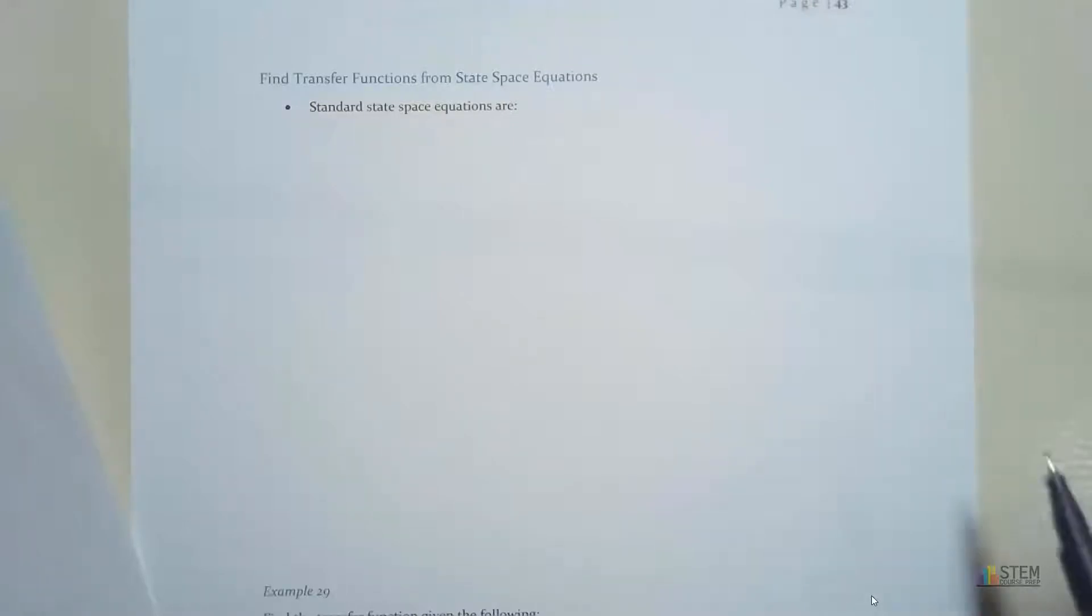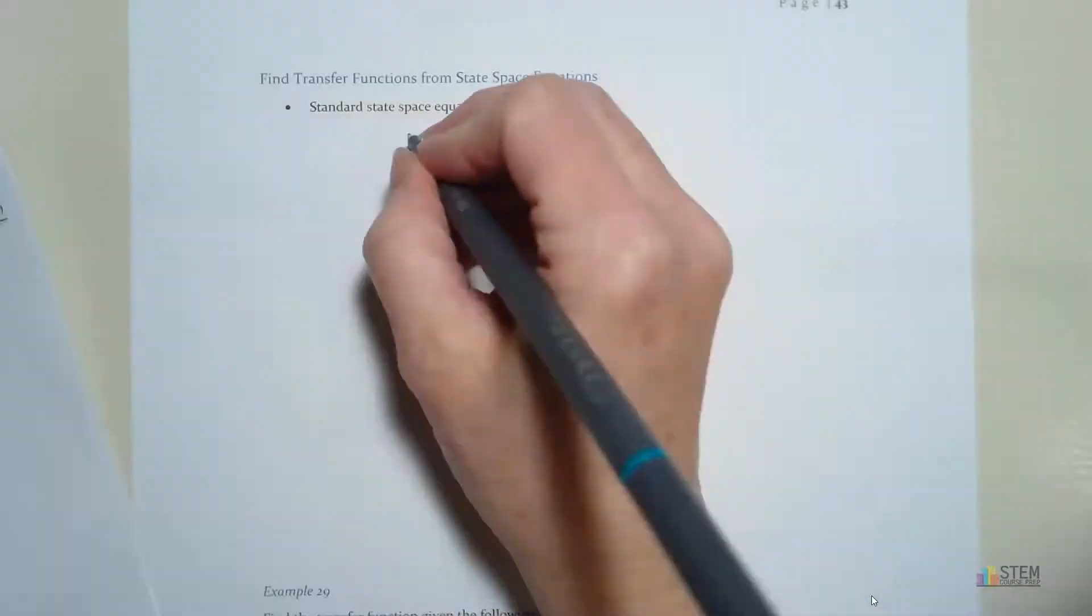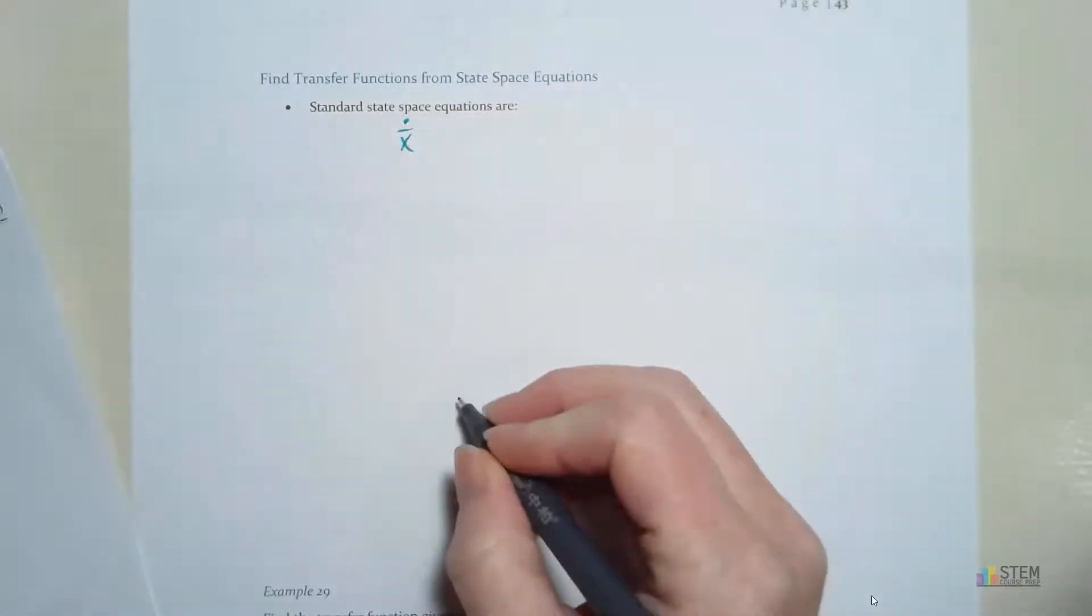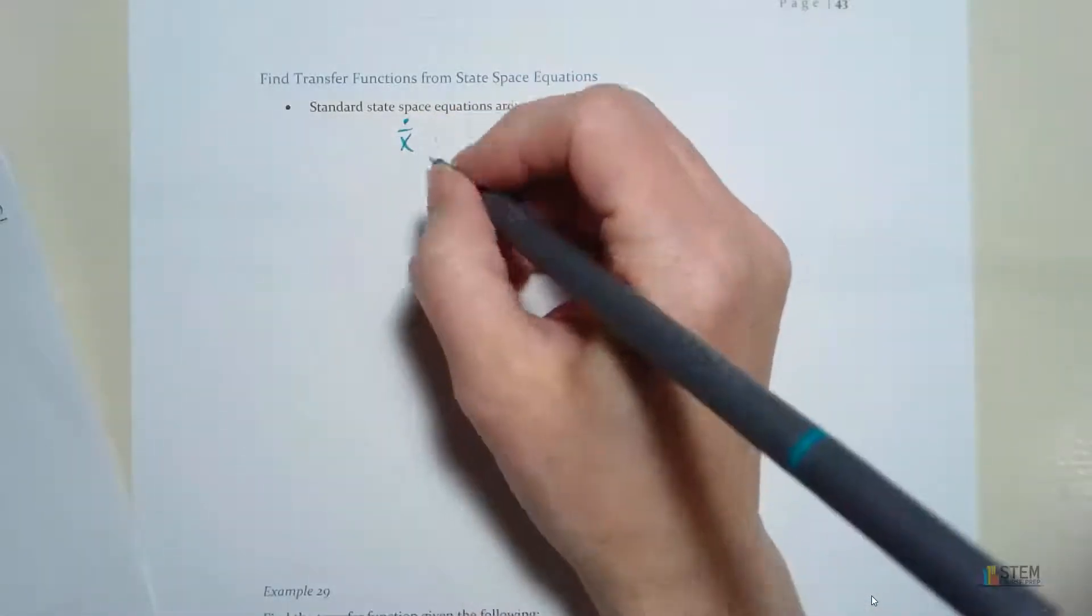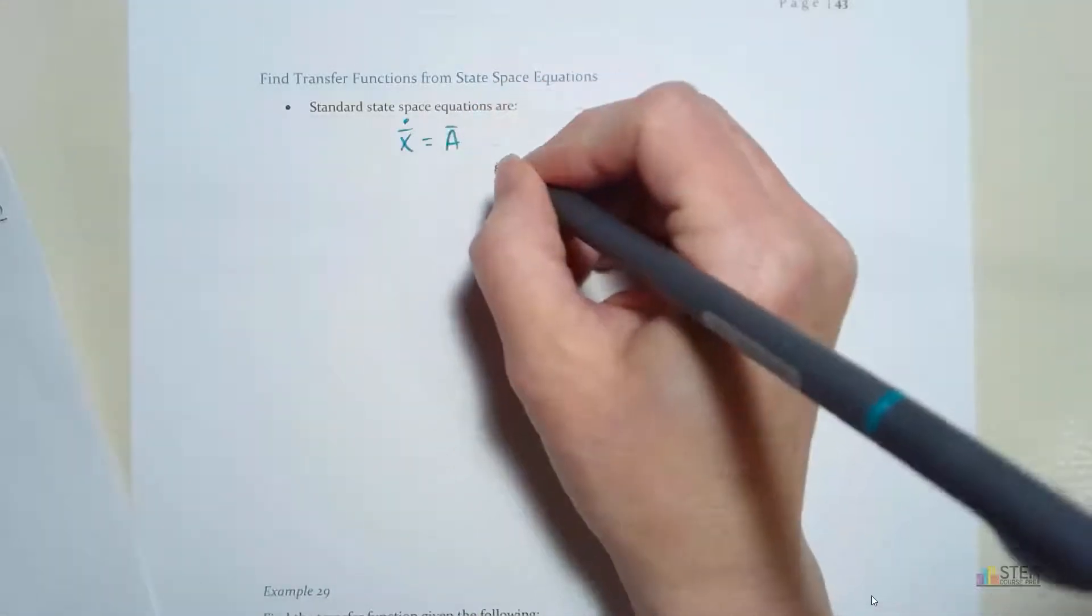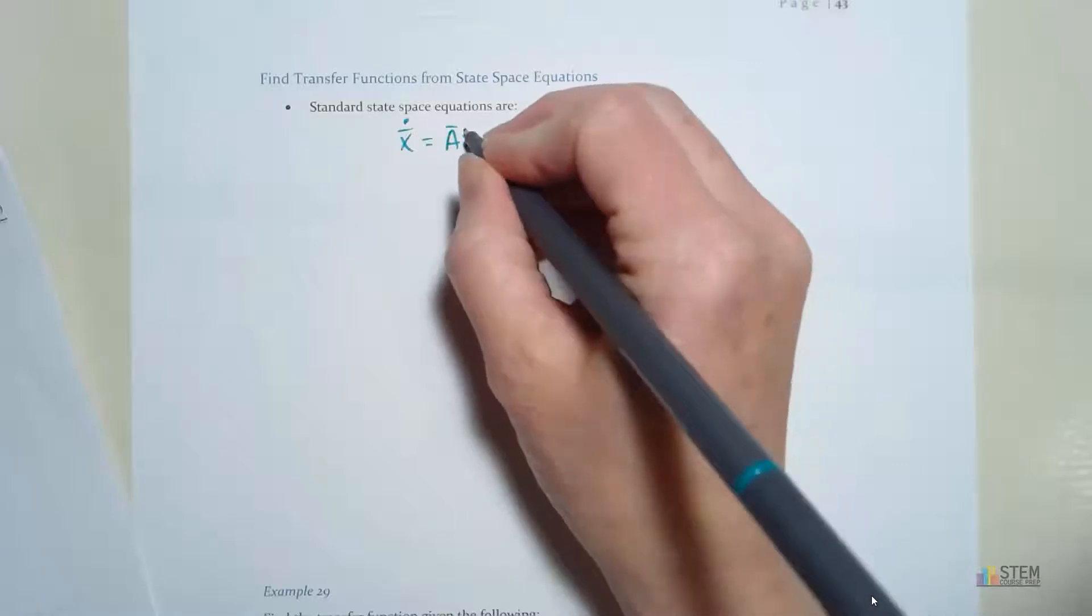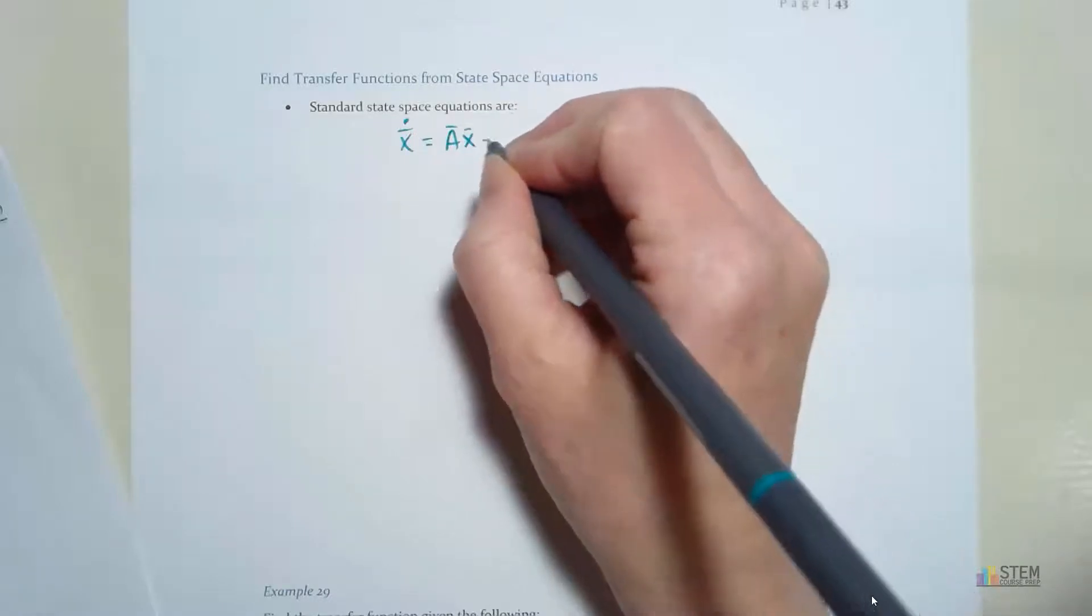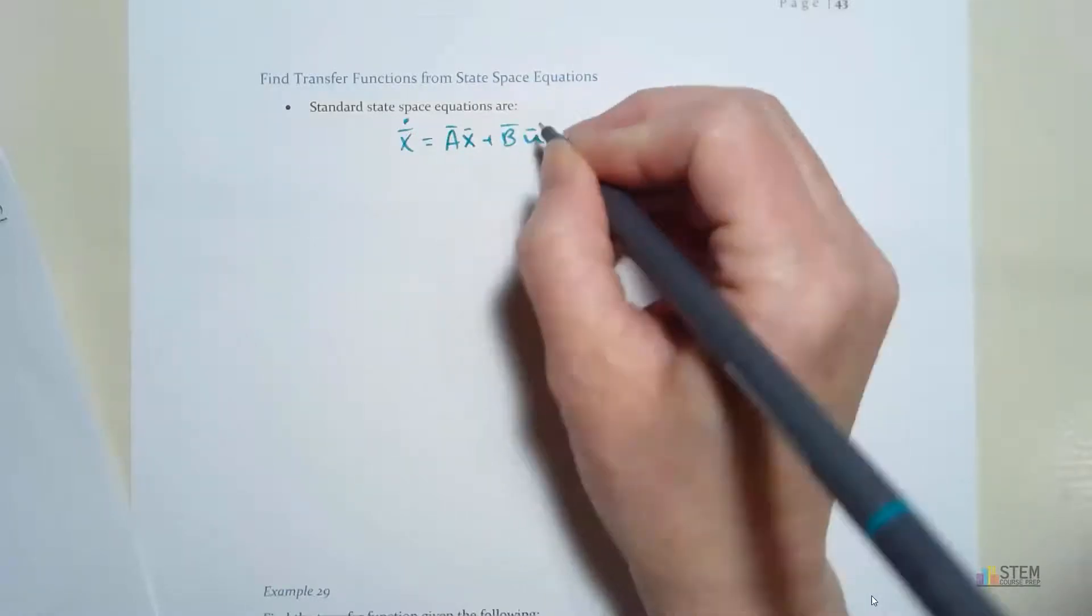Alright, so first let's write down our standard state space equations. So we know we got the x dot, where x is our state vector, and then we're going to have the A matrix times the state vector x plus b times u.